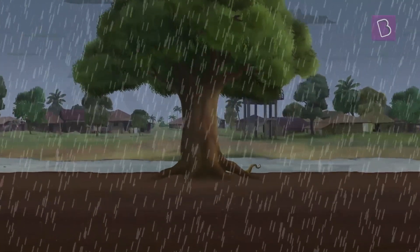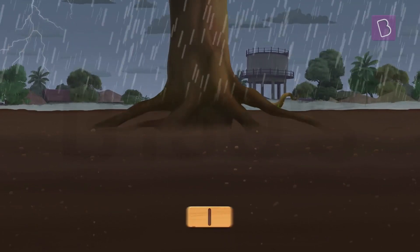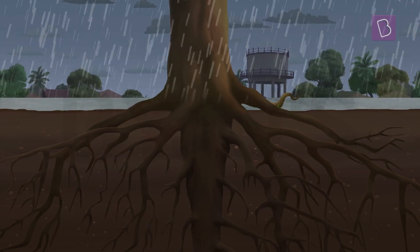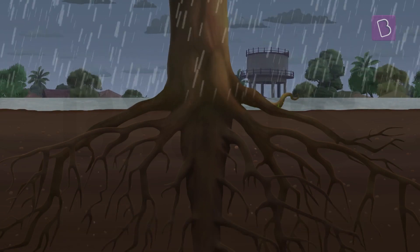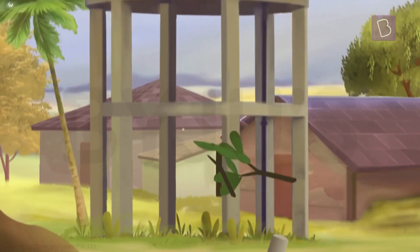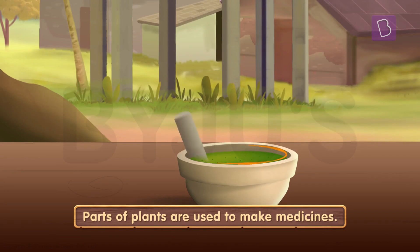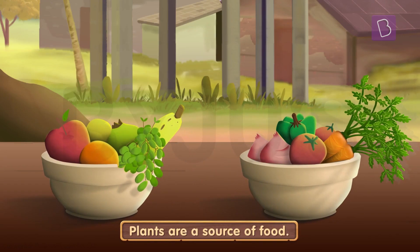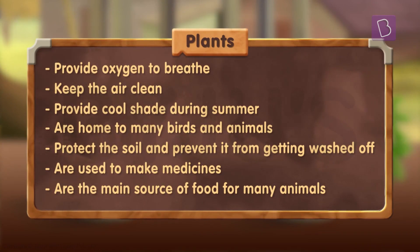Trees even protect the soil and keep it fertile — their roots hold on to the soil and prevent it from getting washed off. Not only this, parts of many plants and trees are used to make life-saving medicines, and most importantly, they are the main source of food for most of the beings on this planet. There are so many uses of plants and trees that it's difficult to list all of them down.